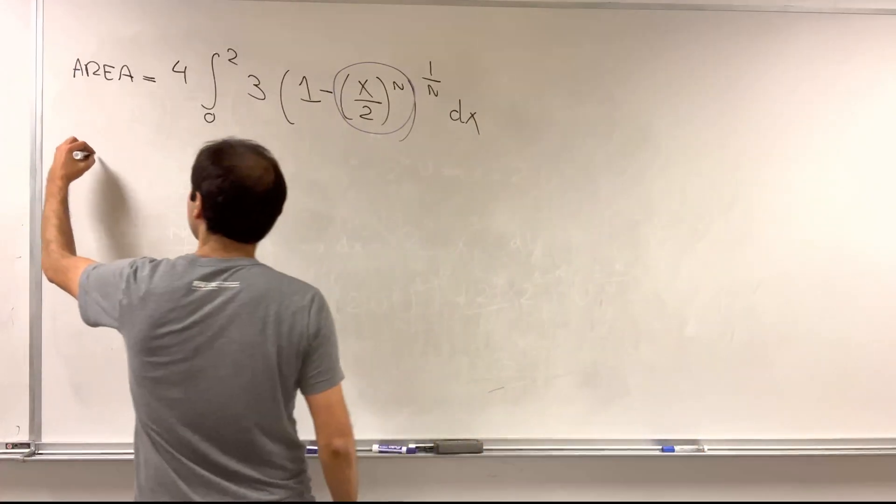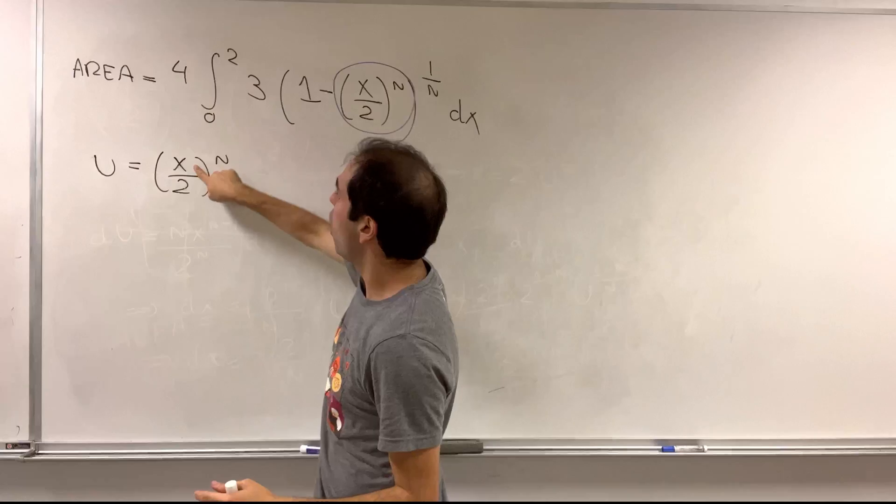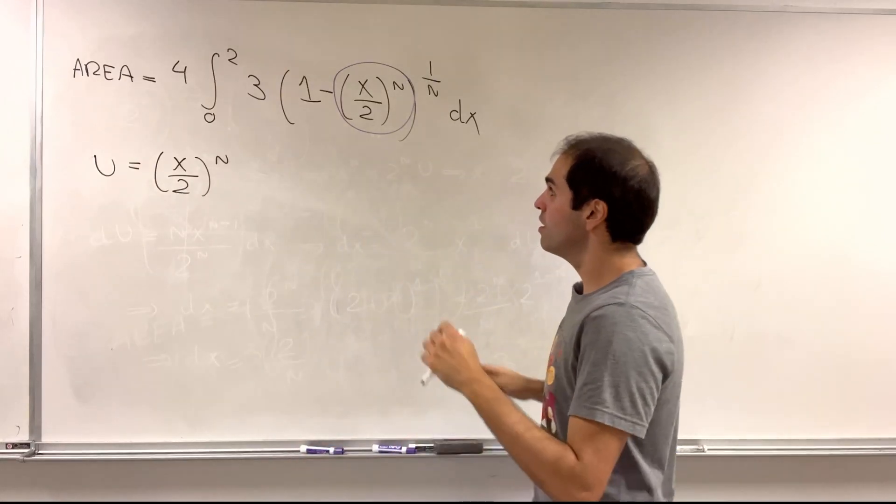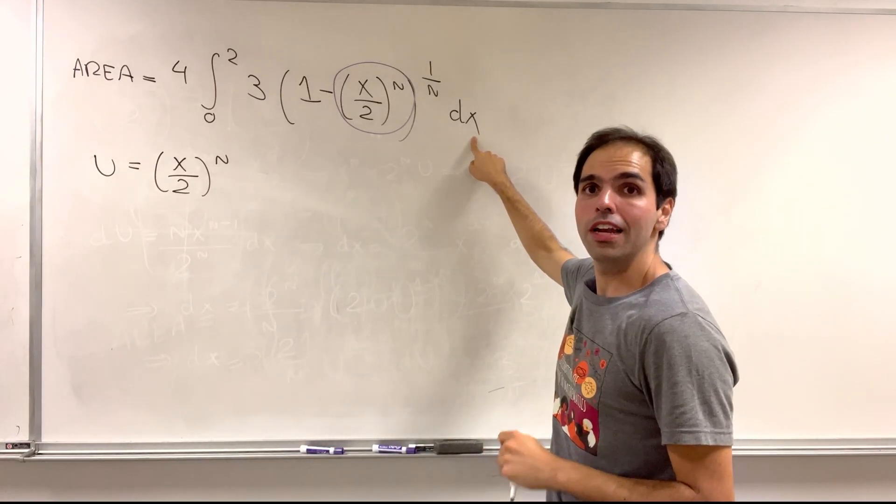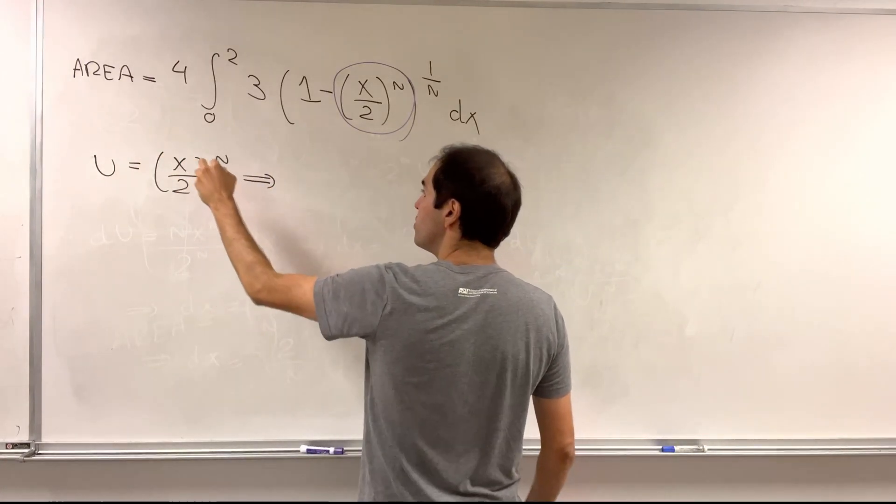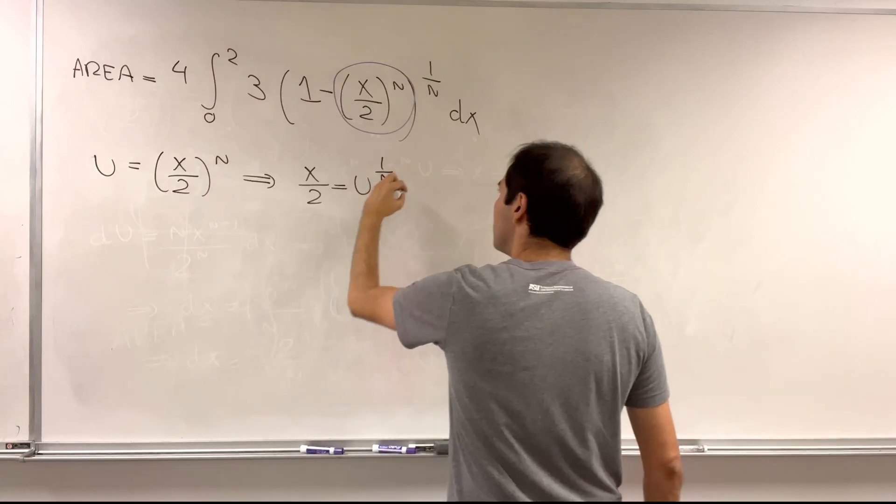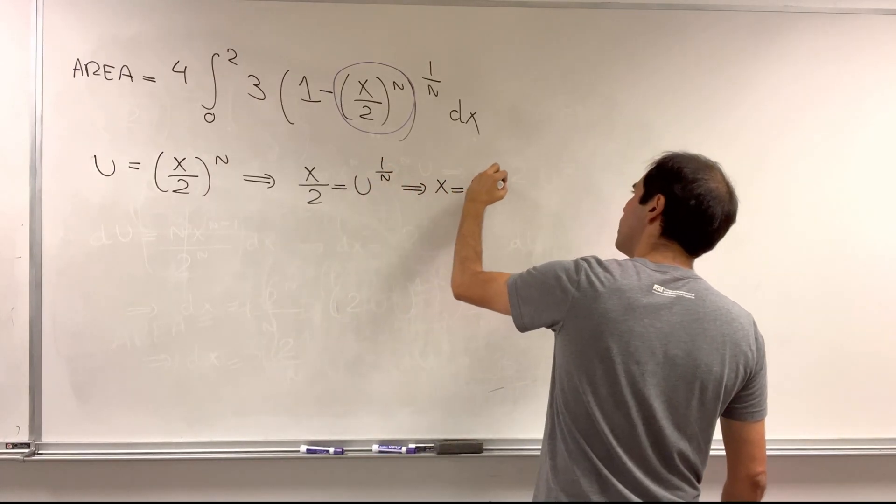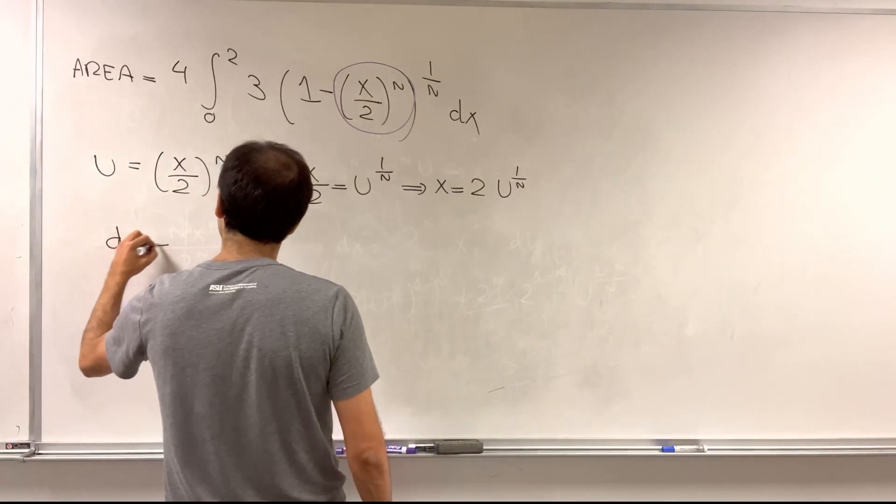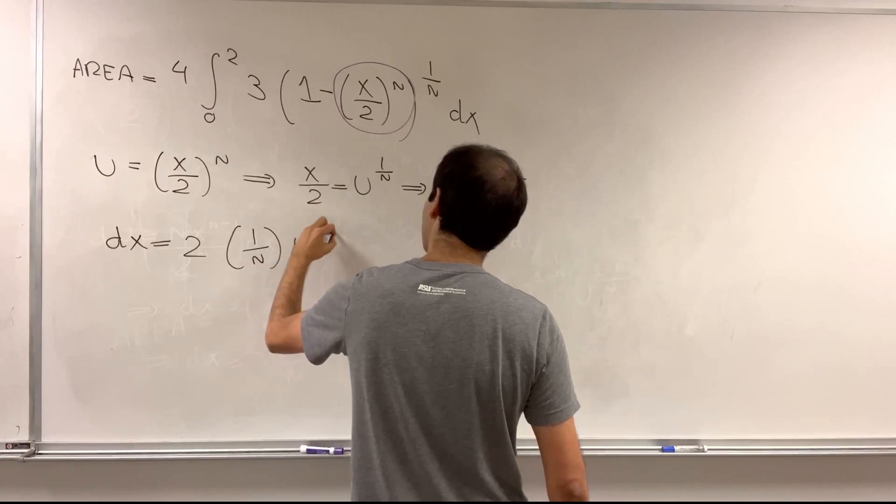If we let u be x over 2 to the n, then u of 0 becomes 0 to the n which is 0, and u of 2 is 1 to the n which is 1. The problem is calculating dx in terms of du. Notice if u is x over 2 to the n, then x over 2 is u to the 1 over n, so x is 2 times u to the 1 over n. Then dx becomes 2 times the derivative, 1 over n u to the 1 over n minus 1 du.